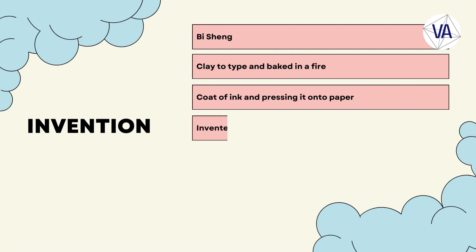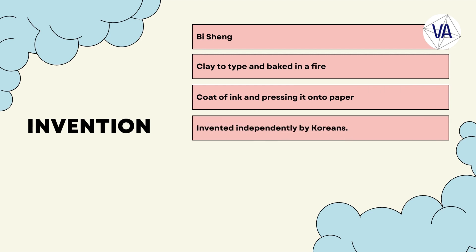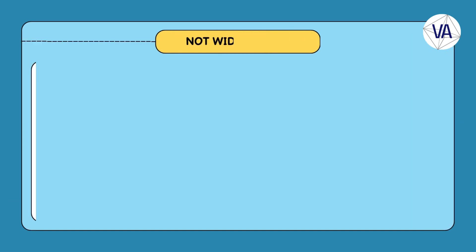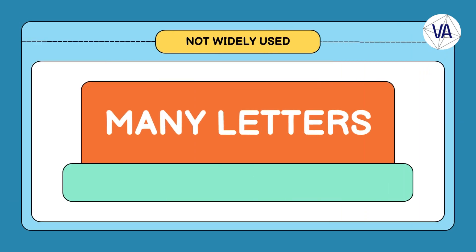Movable type was also invented independently by the Koreans in the 13th century, who used metal to make the type. The oldest printed book using metal movable type is the Jikji, a Korean Buddhist text, which was printed in 1377. Movable type did not become widely used in China or Korea, mainly because of the large number of characters in their languages, which made the process cumbersome and costly. However, movable type was adopted and improved by the Europeans, who had a smaller alphabet and a greater demand for books.